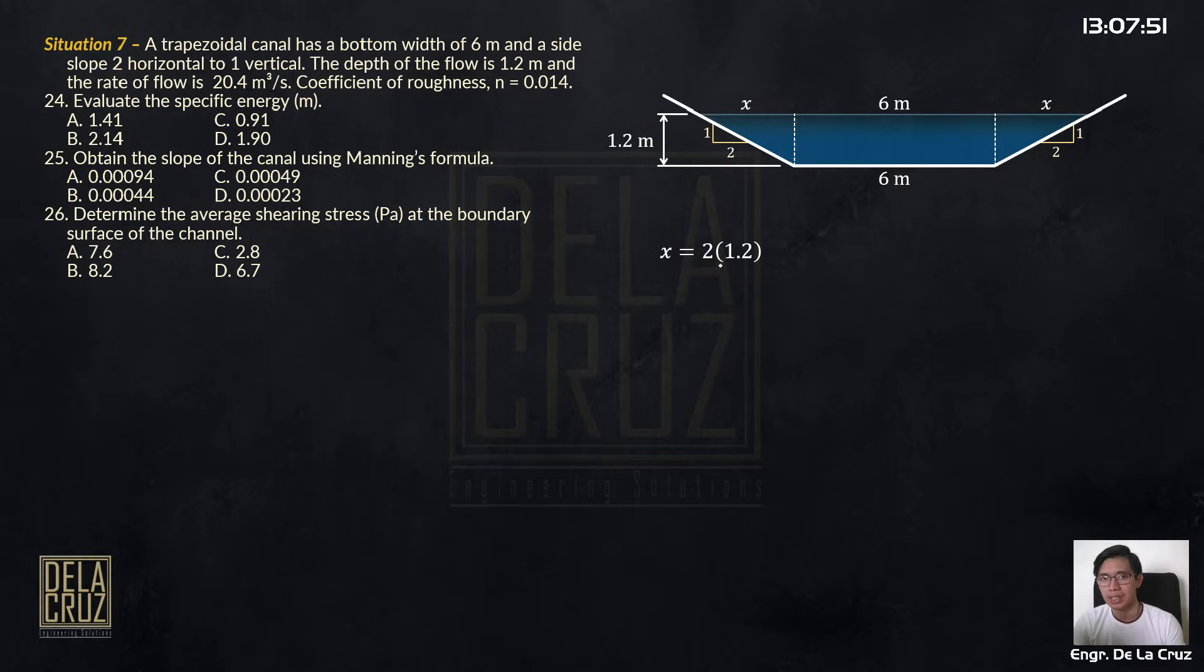So ratio and proportion. So the x there is just twice of 1.2. Ratio and proportion, so x over 1.2, 2 is to 1. So 2.4 is the value of x.